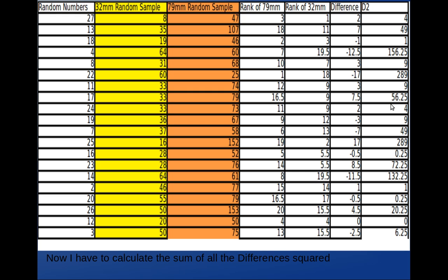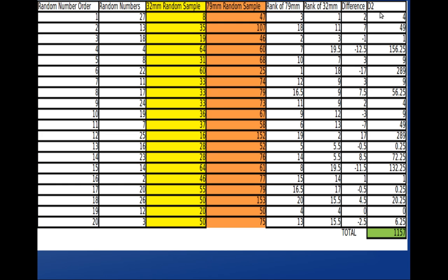And now all I have to do is get the sum of all the differences. So the sum of all these numbers added together would be 1157. And from here on in it is just a job of substituting that number into Spearman's rank formula.